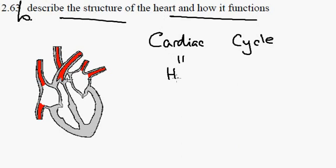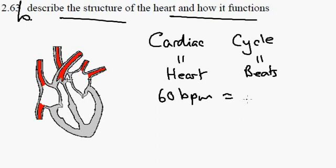Cardiac means heart and the cycle refers to the repeated beats of the heart. So these are the beats. A typical heart rate of 60 beats per minute would mean that we have one beat per second, so a cycle is taking one second.